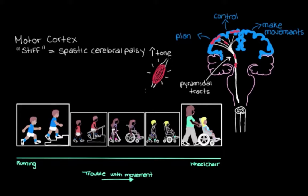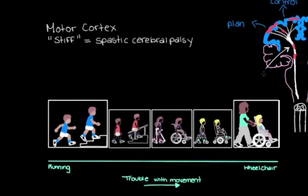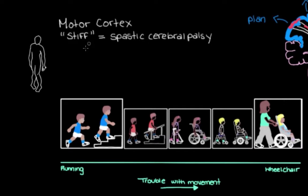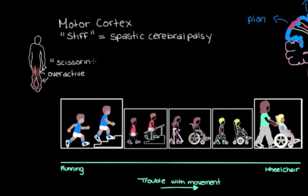Where someone with spastic cerebral palsy falls on the severity spectrum largely depends on how many of their muscles are affected by this stiffness. One common pattern is when muscles on both sides of the lower body are affected. Some muscles in the legs or thighs become more active than others and override the less active ones. A common example is the inner thigh muscles, which pull the thighs together and rotate them inward — in spastic cerebral palsy, these get really active, constantly pulling the legs together and rotating them inward. When this gets really bad, the knees can start to cross over each other like a pair of scissors, which is called scissoring or a scissor gait.